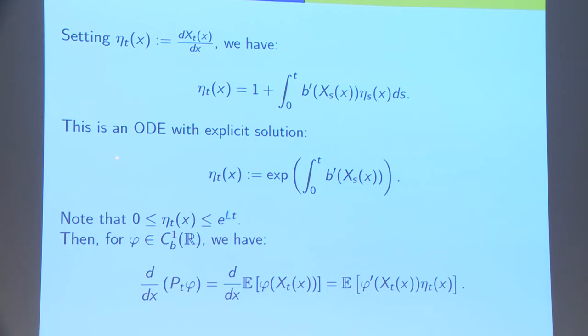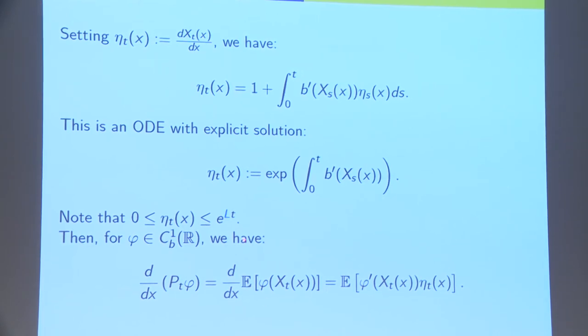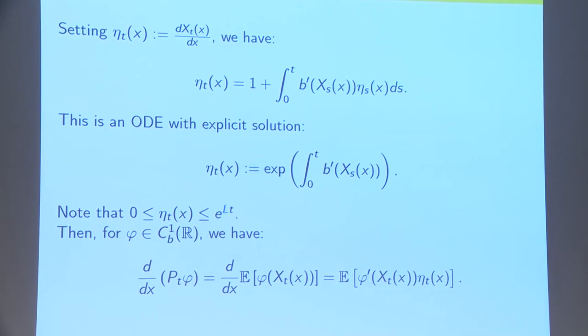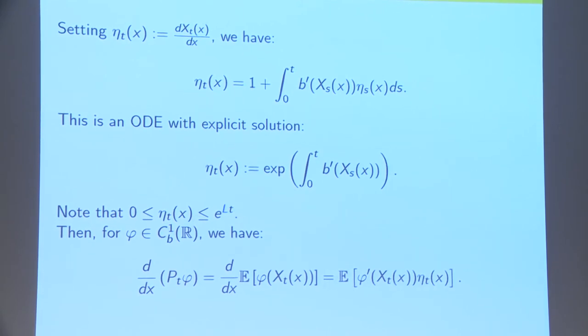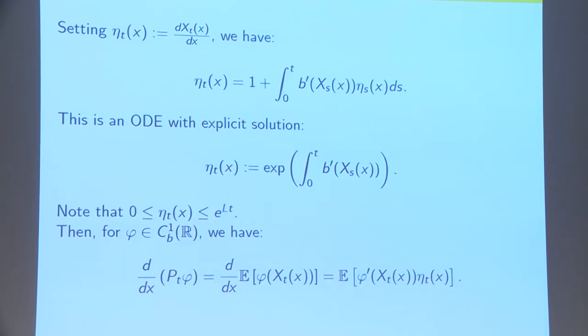We remarked that first it is non-negative, which shows that X of T is an increasing function of X. Moreover, it is bounded by e to the power LT. Why? Because I have made the assumption here that B' is bounded by L.